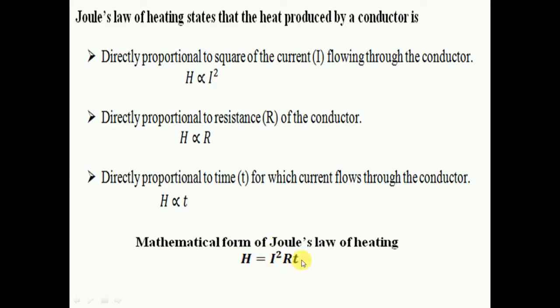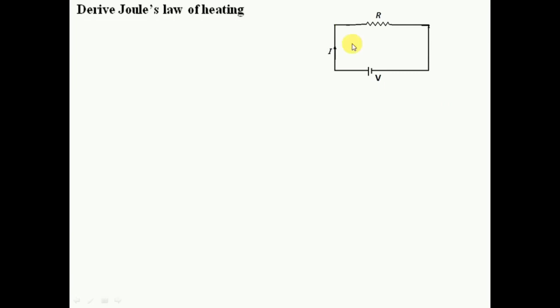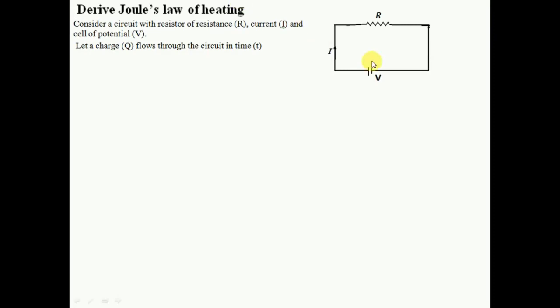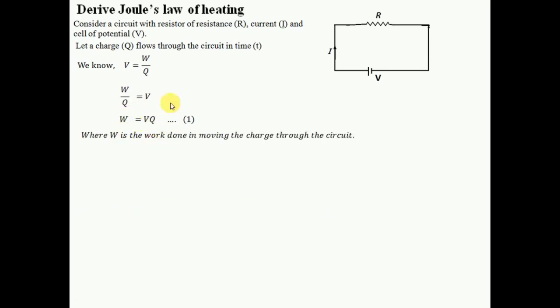Now let's derive Joule's law of heating. I am taking a circuit in which current I is flowing, the potential is V, and resistance is R. Suppose Q is the charge flowing through the circuit in time T. We know that V = W/Q (potential is work done per unit charge). Rearranging, W = VQ. Here, W is the work done in moving the charge Q across the circuit.